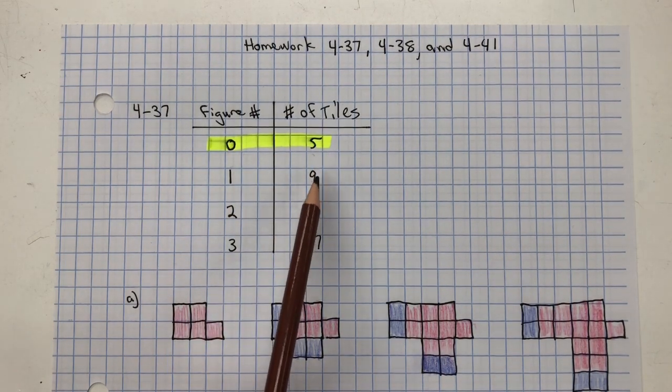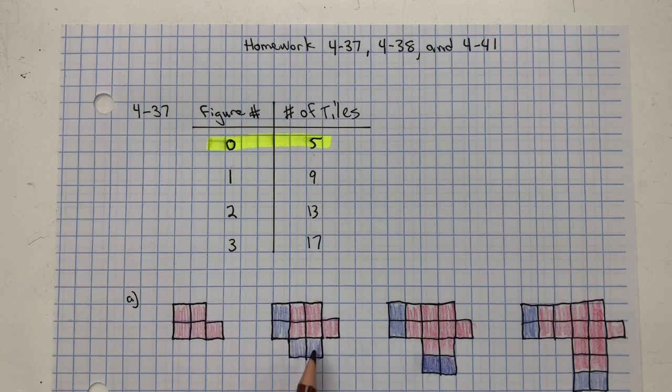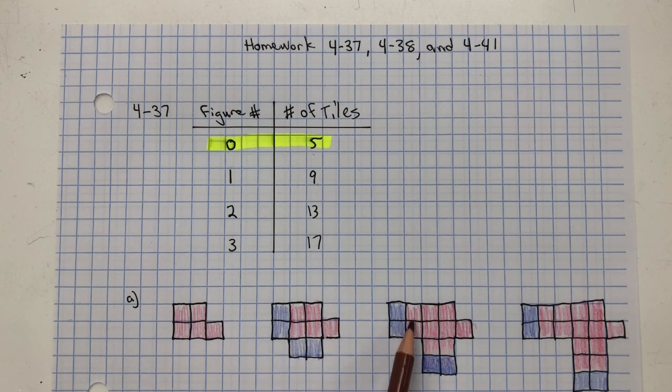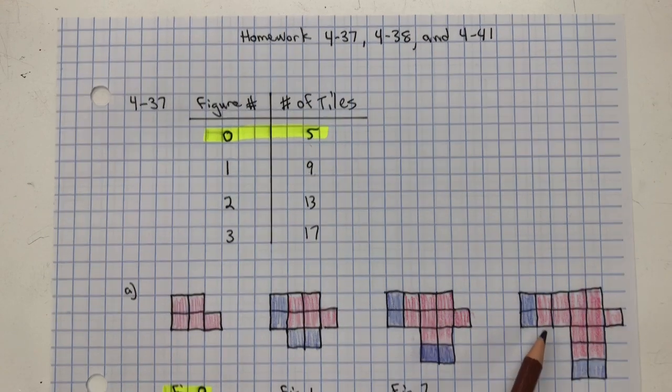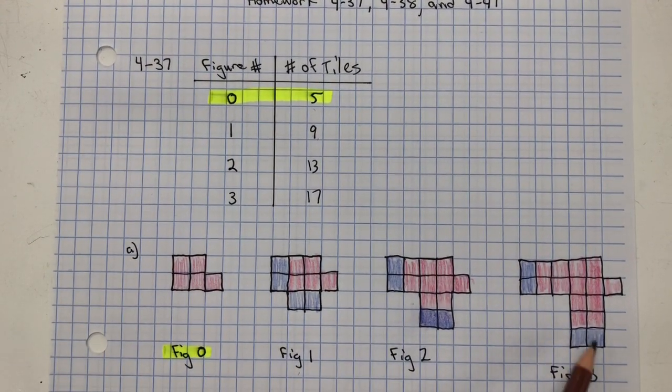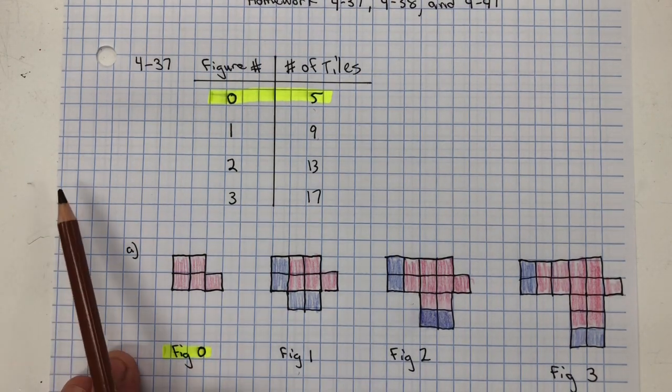So it's going to increase by four, and you can see here's my four that I've increased by four tiles for each figure number, and figure two has four additional tiles from the previous one. Here in red is figure one with four additional, and from figure two to figure three I have four additional tiles. So it's increasing by four tiles for every figure number.